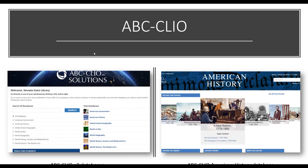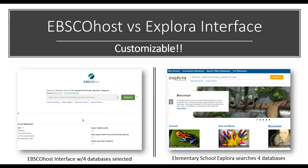ABC-CLIO has a universal portal with all the titles — you can search all of them, or search two of them, or search American Government and American History and World at War all at the same time. Or you can link to each individual database. Here's what American History looks like.